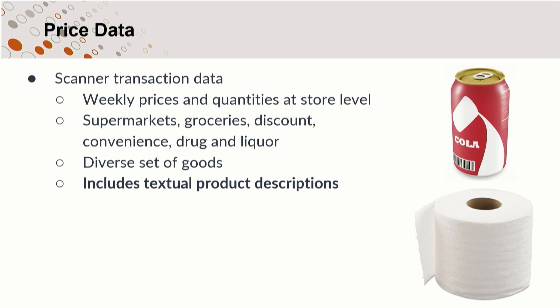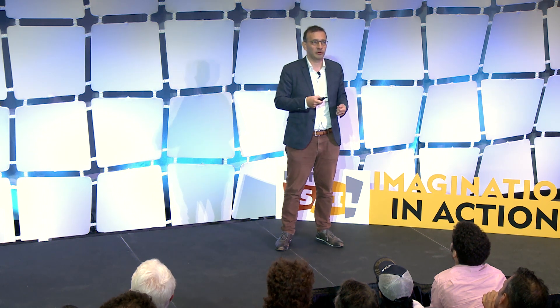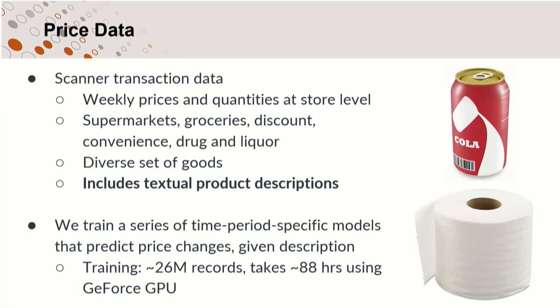How do we actually do that, and where does machine learning come in? We have a huge number of scanner transactions from supermarkets, groceries, liquor stores, etc. We have data on a weekly time scale for their prices, where it was purchased, and crucially, a small text string describing what was purchased. We build a machine learning model that takes as input a description of the product and predicts what it ought to cost. People's views on what things should cost change over time, so we rebuild that model for basically every quarter in our time series. This takes a lot of data by economic standards, but not so much by computational standards — it's pretty manageable.